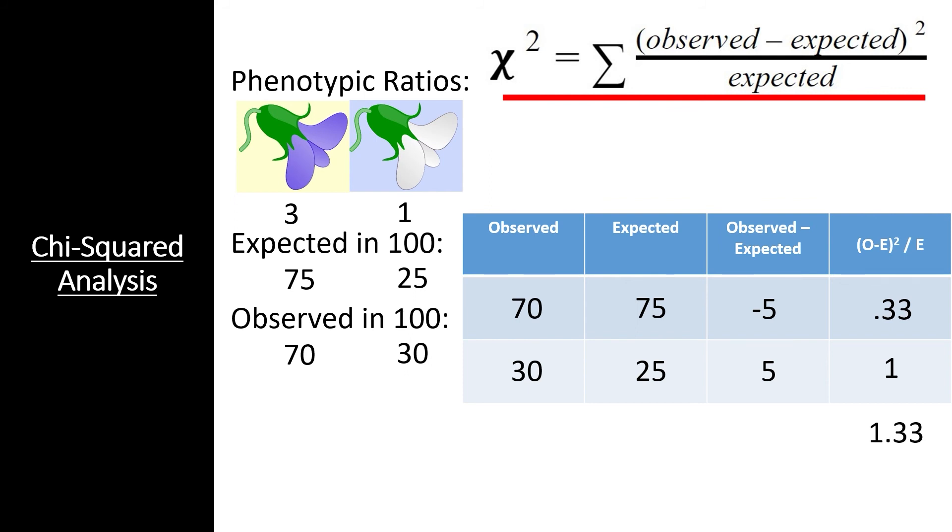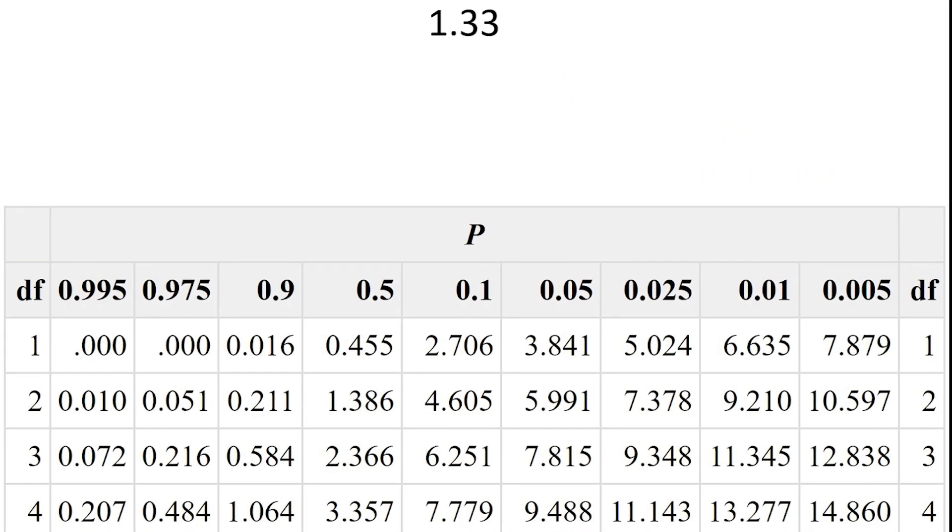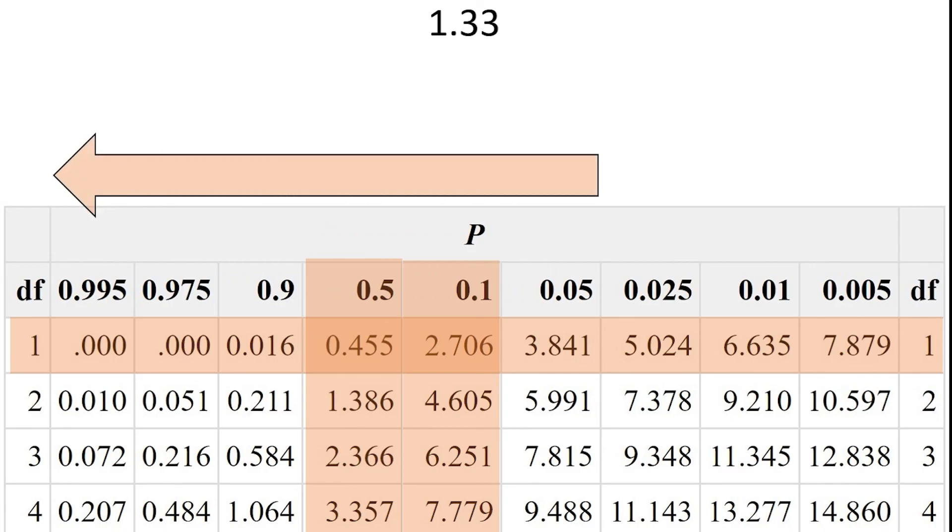When we do so, we find our chi-squared value is 1.33, but what does this number mean? To understand if our chi-squared value supports our hypothesis, we have to compare our chi-squared value to a critical values table. First, we calculate how many degrees of freedom are present in our chi-squared value. The degrees of freedom is simply the number of classes minus 1. Since we only had 2 classes, we only have 1 degree of freedom. Then, we find where our chi-squared value fits in the table. 1.33 fits in the table between the p-values of 0.5 and 0.1. This means that between 50% and 10% of the time, we would expect deviations as large as the deviations we observed. Since most scientists agree that p-values above 5% signal support for a hypothesis, we can accept our observations as support for our hypothesis.